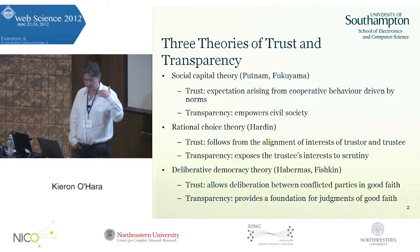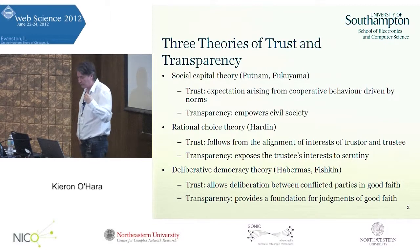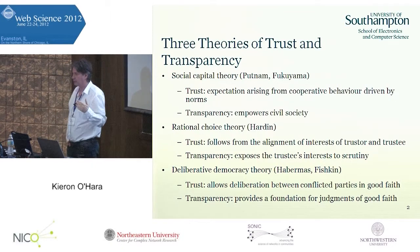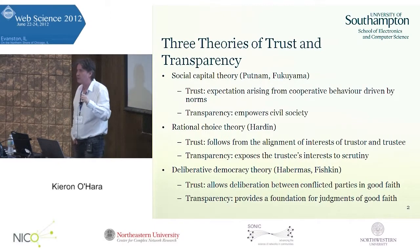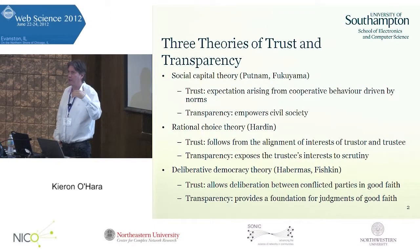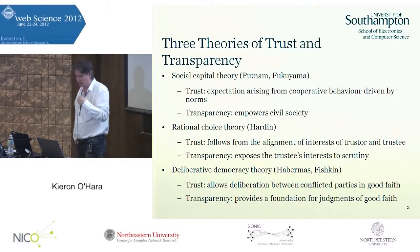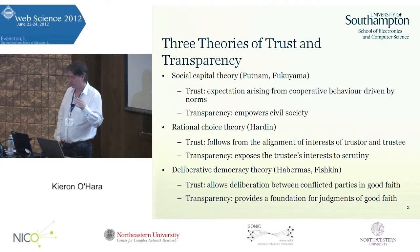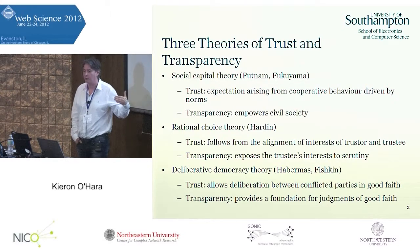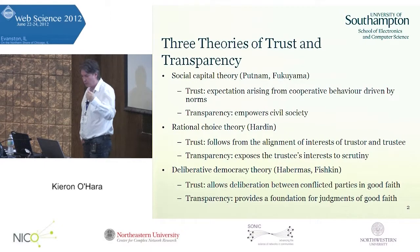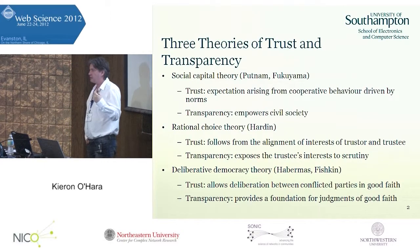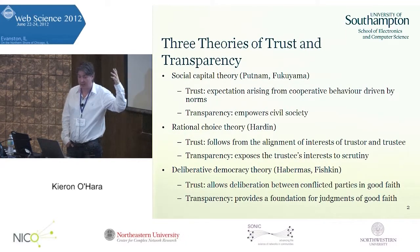The third theory is deliberative democracy theory — I'll invoke Habermas here. Trust allows deliberation between conflicted parties to take place in good faith. Everyone discusses their problems through proper deliberation, knowing that all the cards are on the table and that the discussion is open and honest. Transparency provides a foundation for those judgments of good faith — we know there are no hidden cards being held back. Open data fits into this by providing three types of information useful for promoting trust in the eyes of all three theories.